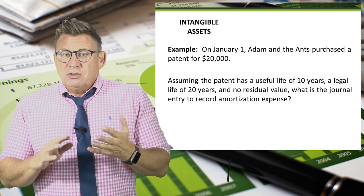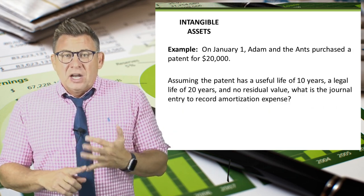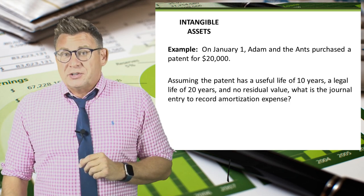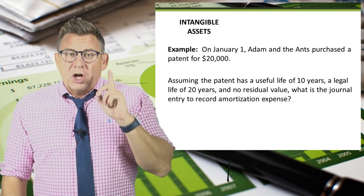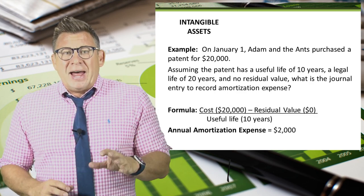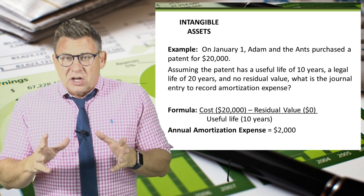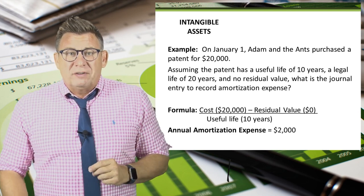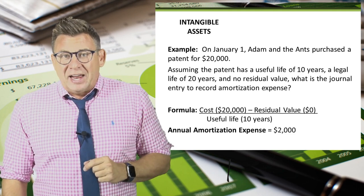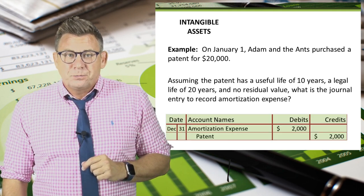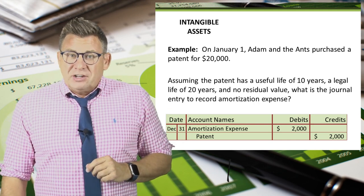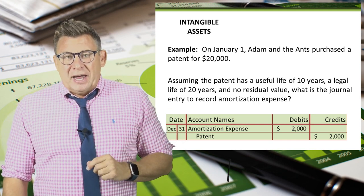Let's assume the patent has a useful life of 10 years and a legal life of 20 years. Which one should we use in our amortization calculation? We always use the useful life. So the patent cost of $20,000 minus a zero residual value divided by 10 years of useful life gives us $2,000 of annual amortization expense. We record the journal entry by debiting amortization expense and crediting the patent for $2,000.